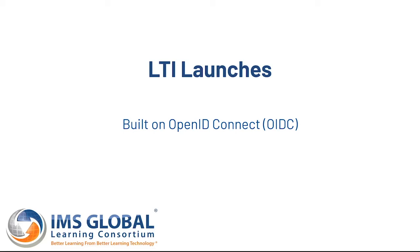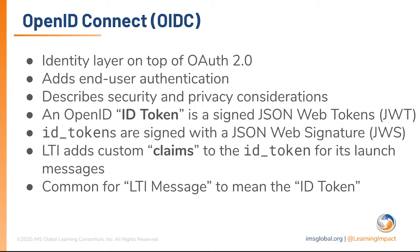Now let's talk about LTI launches in more depth. LTI 1.3 is built on top of OpenID Connect, often abbreviated as OIDC. OIDC is an identity layer on top of OAuth 2. It adds end user authentication and describes security and privacy considerations. One of the core pieces to remember in OpenID Connect is the ID token — I'll be referencing ID token very frequently. An ID token is a JWT signed with a JSON web signature.